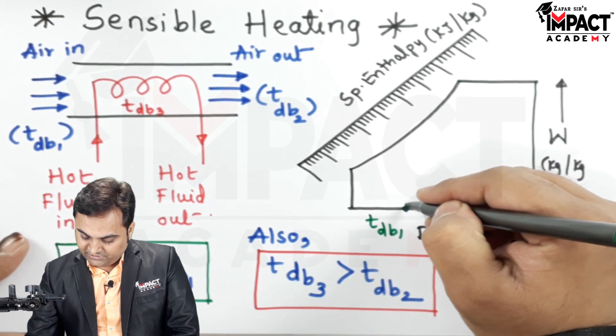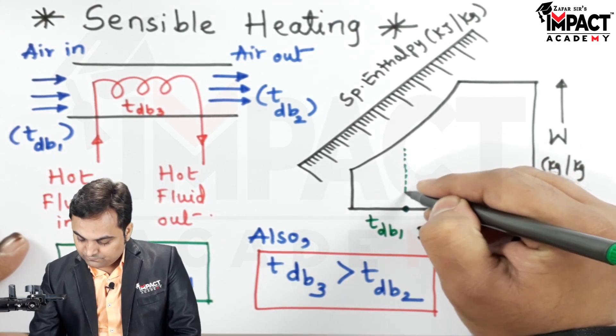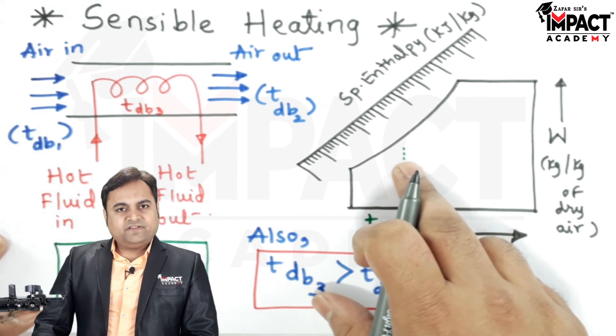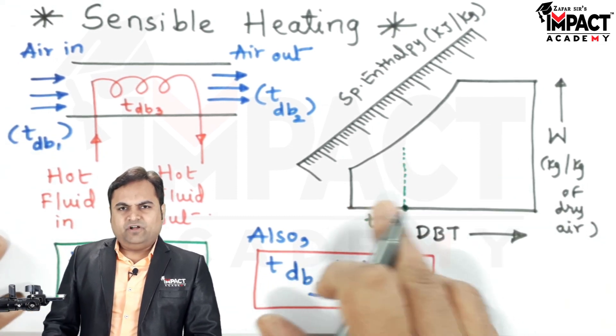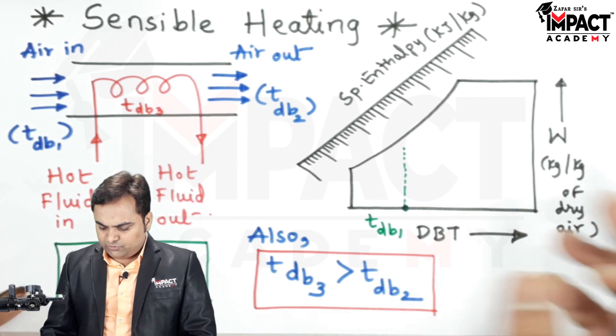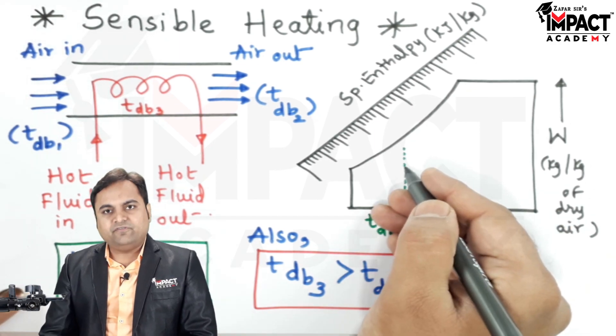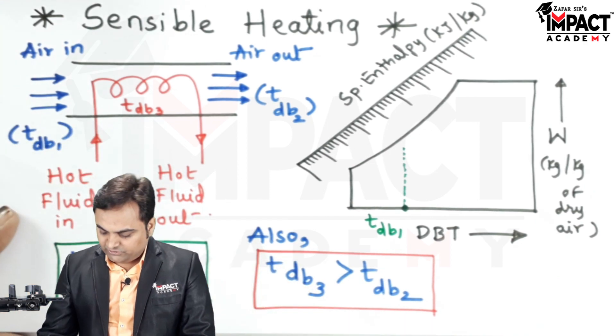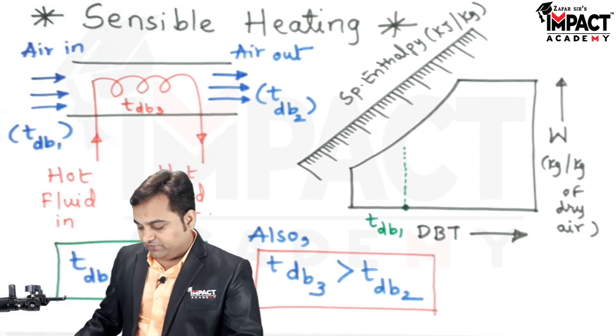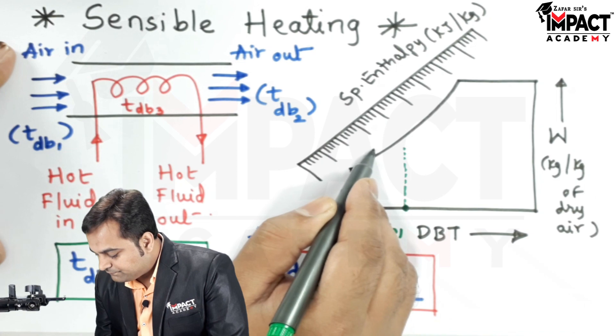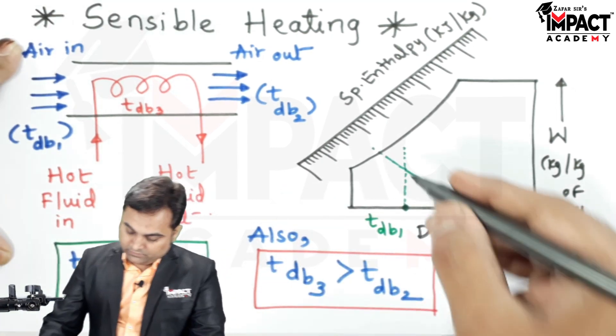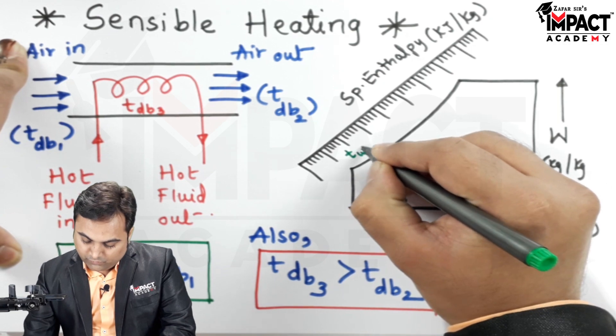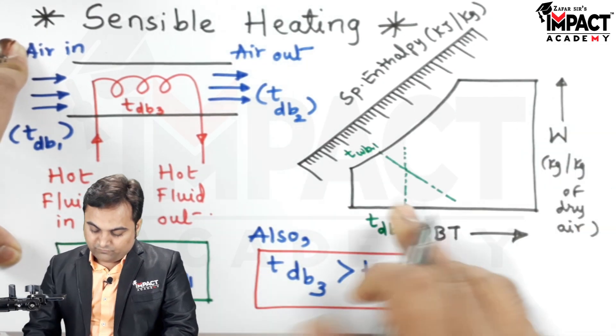Then just projecting it lightly, to get the intersection here we should have at least one more point over here. Now suppose I can say that if we have the wet bulb temperature of the air which is incoming at this point 1, just showing it with the help of an example, this line which I have drawn will be indicating the wet bulb temperature for the incoming air.